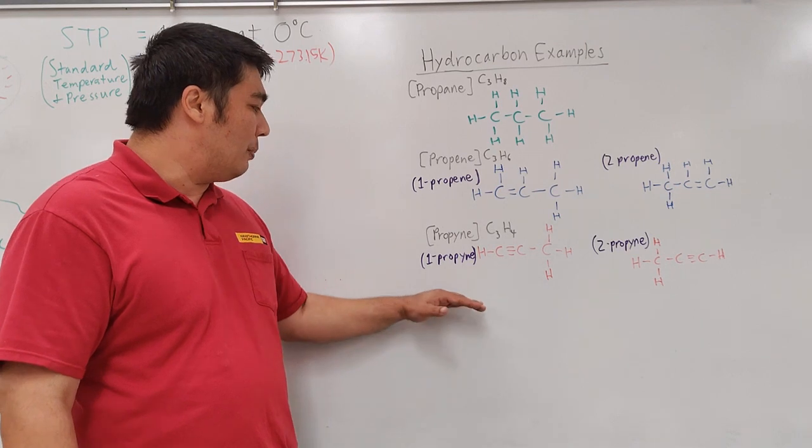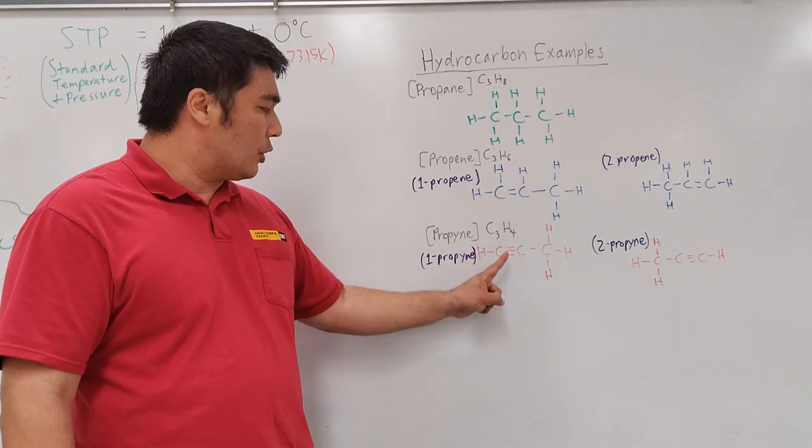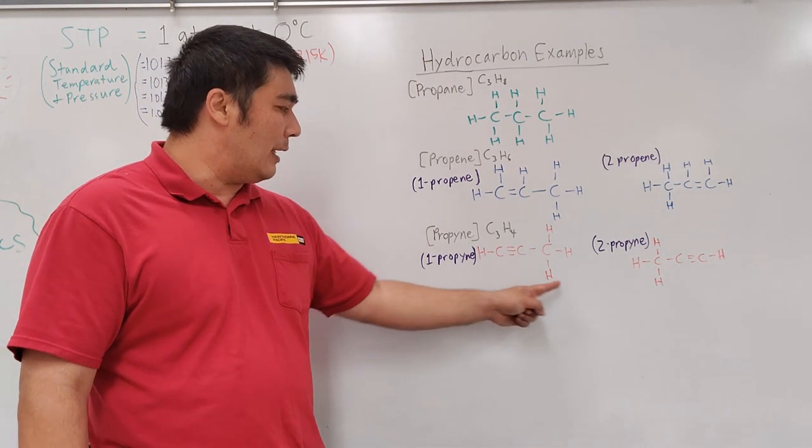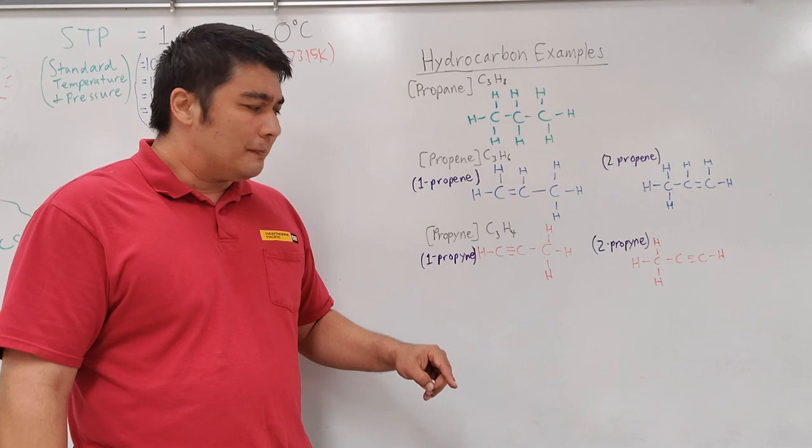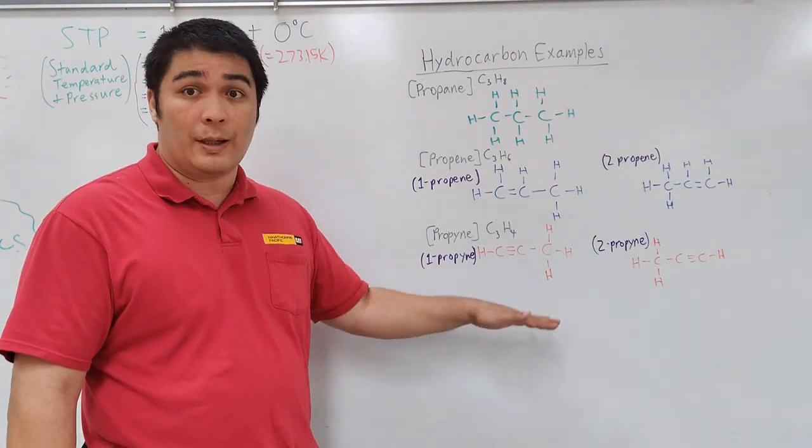The alkyne version of it, you have 1-propyne and 2-propyne, where there's a triple bond here and then there's a single bond of hydrogen atoms all around. The one thing, and this may seem to get kind of complicated quite quickly.